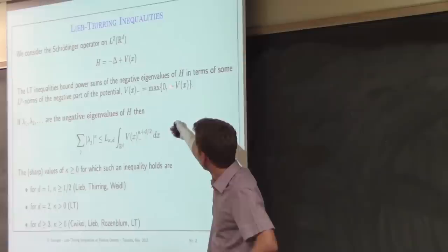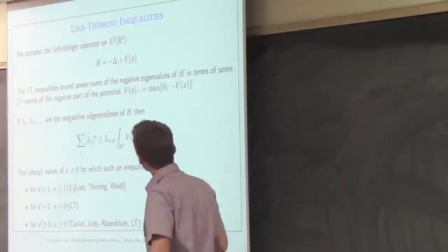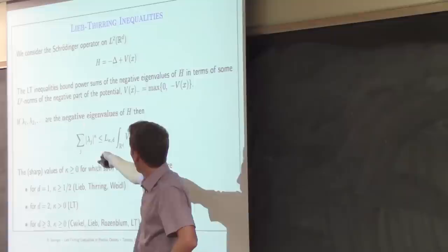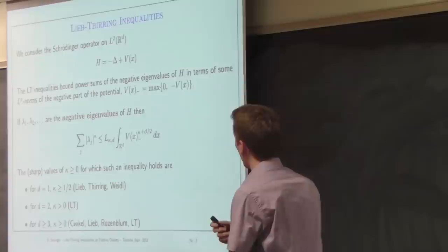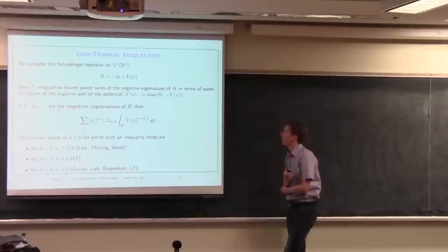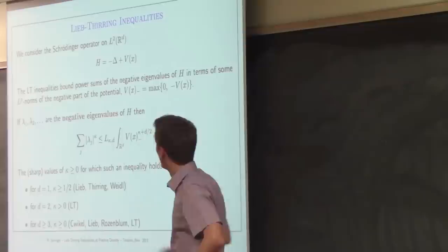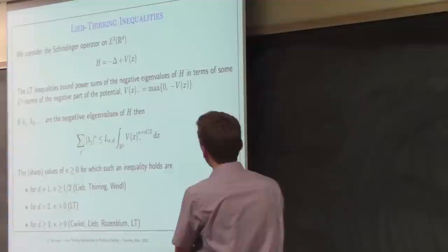Concretely, the Lieb-Thirring inequalities give bounds on power sums — sums of powers of all the negative eigenvalues of such an operator — in terms of an appropriate L^p norm of the potential. More precisely, only the negative part of the potential enters: if the λ's are the negative eigenvalues of H, then the sum of the κ-th power of the negative eigenvalues can be bounded by a constant times the integral of the negative part of the potential to the power κ + d/2. This constant doesn't depend on V.